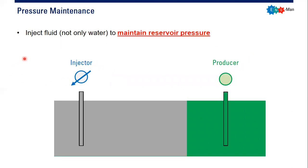Now we go to pressure maintenance. In pressure maintenance, we have options — we can inject gas or water, or actually any kind of fluid, not only water, into the reservoir to maintain the reservoir pressure. If we maintain reservoir pressure, of course we can improve oil recovery later on, but the primary goal and main focus is to maintain reservoir pressure.